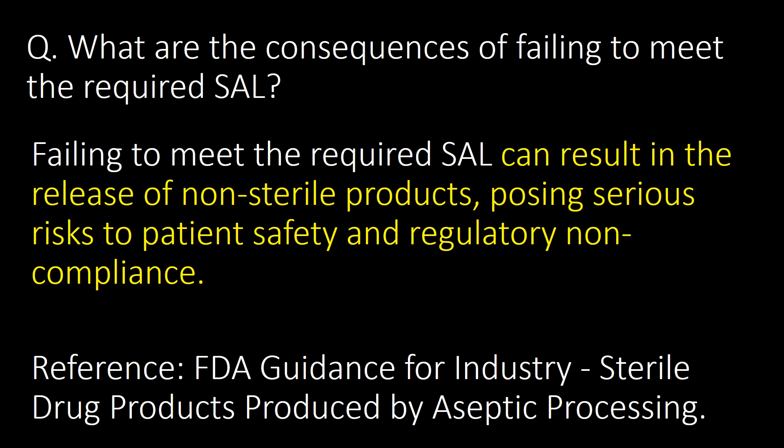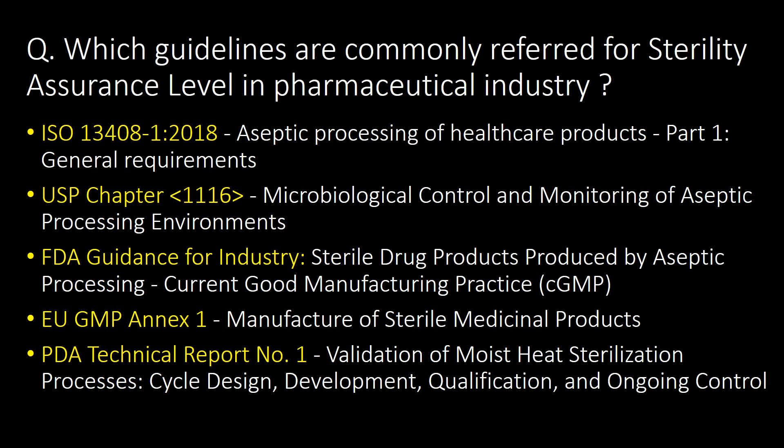What are the consequences of failing to meet the required sterility assurance level? Failing to meet the required SAL can result in the release of non-sterile products, posing serious risk to patient safety and regulatory non-compliance. Reference: FDA guidance for industry. Commonly referred guidelines for sterility assurance level include ISO 13408, USP Chapter 1116, FDA guidance for industry, EU GMP Annex 1, and PDA Technical Report No. 1.